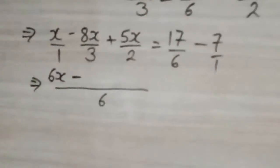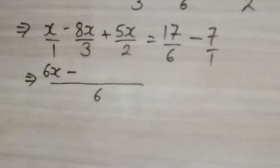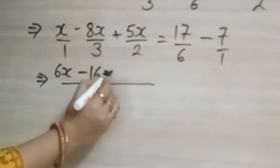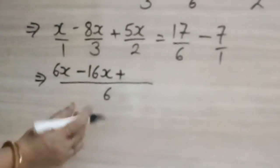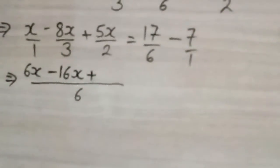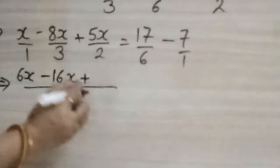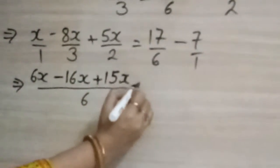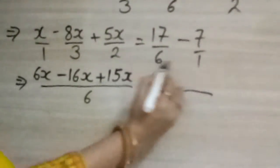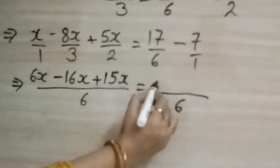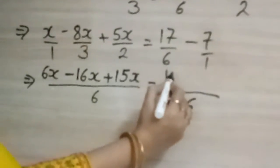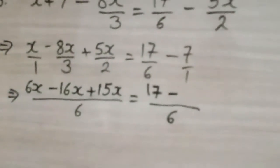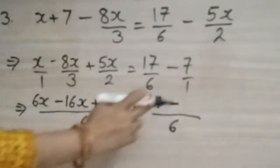6 divided by 3 answer will come 2 and 2 into 8 will become 16x plus 6 divided by 2 answer will come 3, 3 into 5 it will become 15x is equals to here denominator will become 6 only, 1 and 6 LCM will be 6, 17 minus 1 divided by 6 divided by 1 will become 6 only.